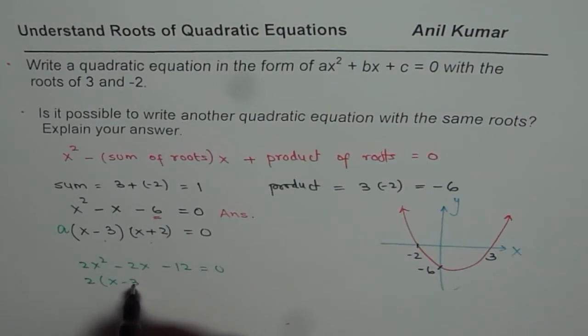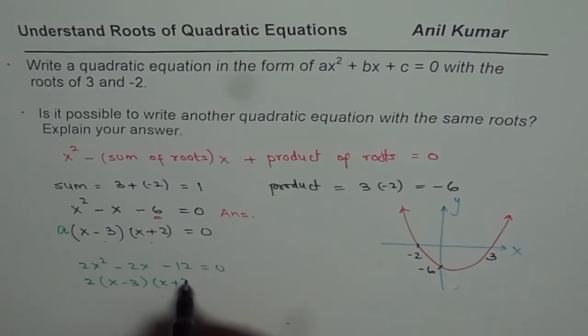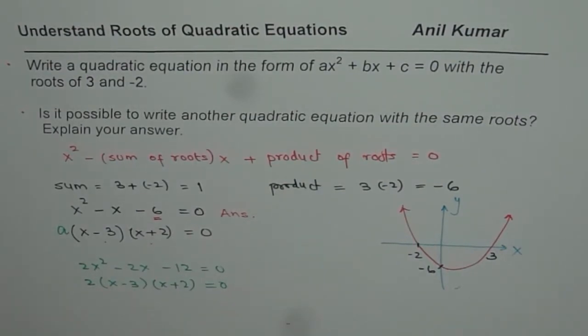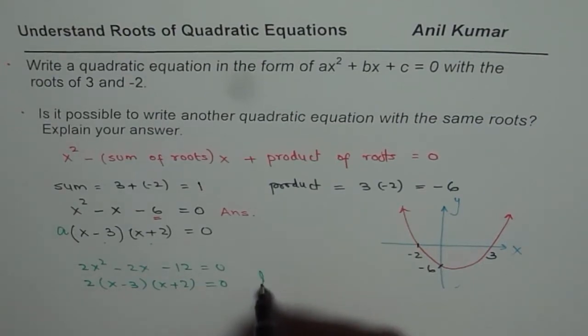2(x - 3)(x + 2) = 0. So we could get infinite solutions.